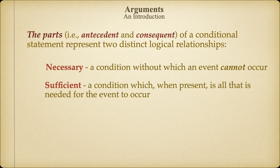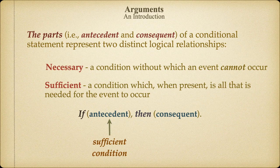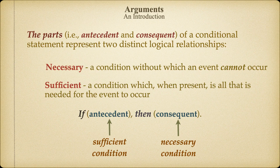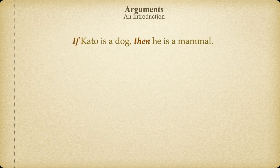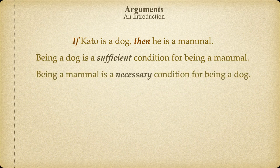Being infected does not mean that you'll get sick, but being sick does mean that you did get infected. So whatever those other conditions are — perhaps a weakened immune system or some underlying medical conditions which, when conjoined with the infection, cause you to be sick with COVID-19 — that is what we identify as a sufficient condition. Whenever a sufficient condition is met, we will have the consequent.